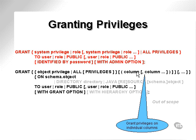Here's the syntax for granting a privilege. The piece in red at the top is for granting a system privilege. So you grant a system privilege, or a role, or a group of system privileges and roles, or all privileges, to a user, or role, or public, or a list of. You can also identify by a password with the admin option. The admin option implies that when you grant a privilege to another user with the admin option, that they can subsequently grant it to someone else. Without the admin option, they cannot grant it to someone else.